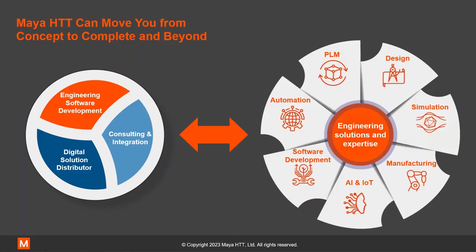A little more about us digging into the company and how we operate. We have three main parts. So we're an engineering software development company. That's writing code. We're a digital solution distributor. So we sell the Siemens products and our own products as well, like SATK. And then we also have a consulting and integration group.